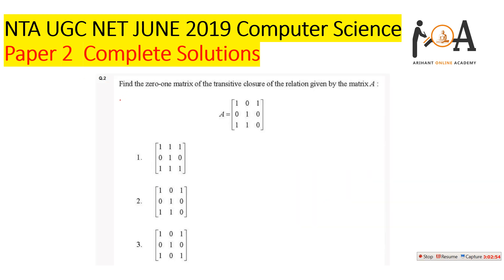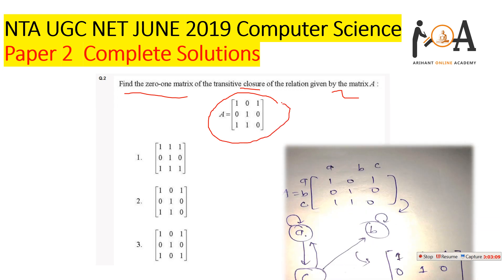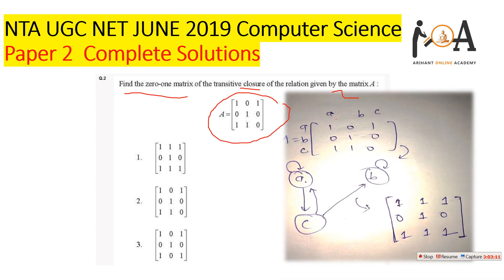The next question, question number two, asks us to find the zero-one matrix of the transitive closure of a relation given by a matrix. So we have to generate the transitive closure zero-one matrix from the given matrix. If we generate a graph diagram from the given matrix, we can identify all the connections and self-loops.